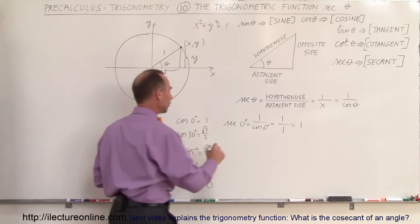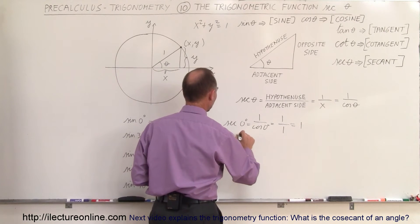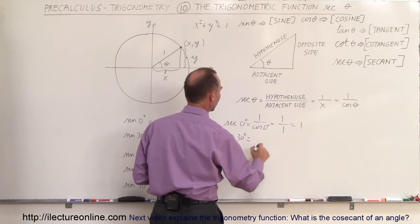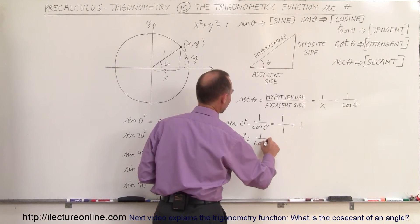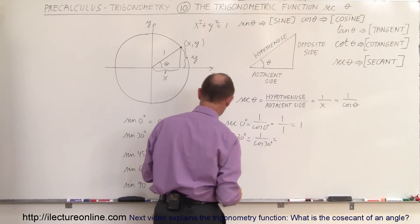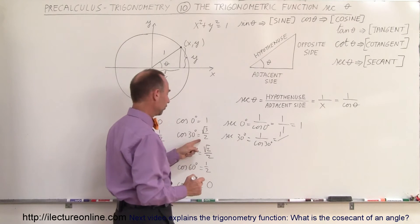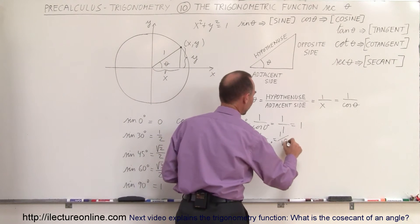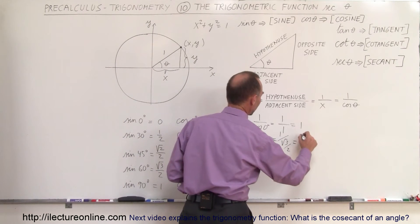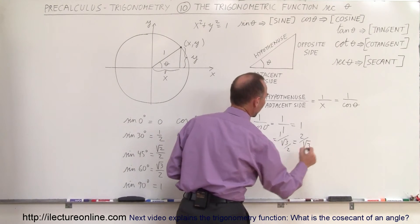How about the secant of 30 degrees? The secant of 30 degrees is equal to 1 divided by the cosine of 30 degrees, which is 1 divided by the square root of 3 over 2, which equals 2 divided by the square root of 3.